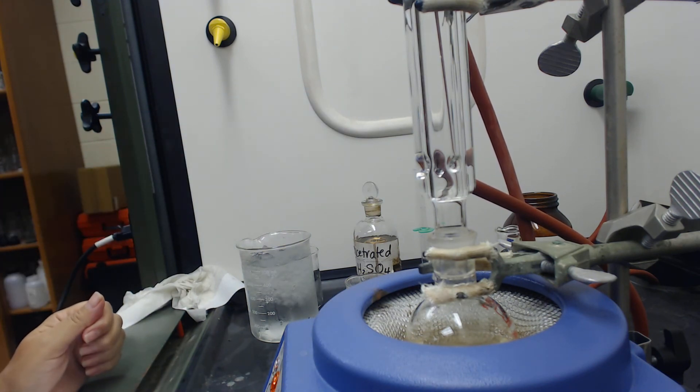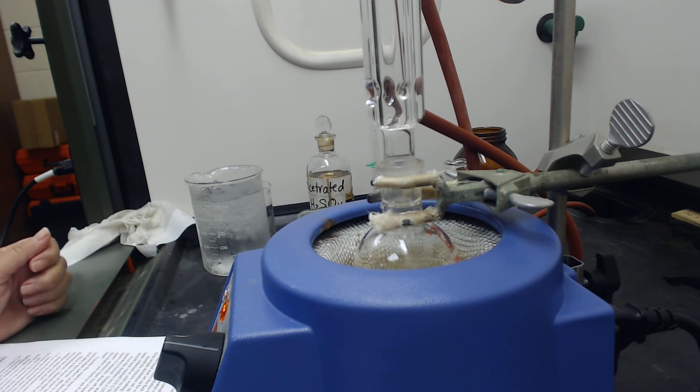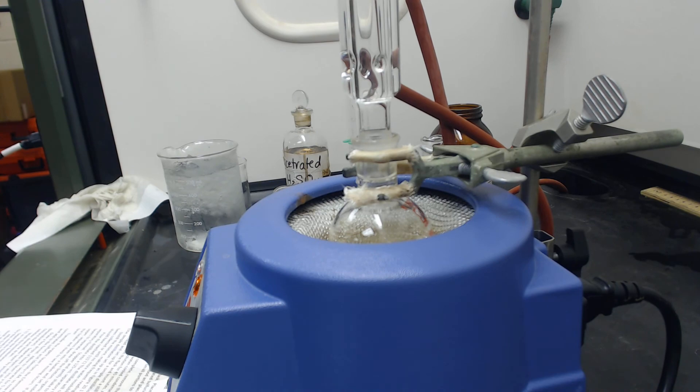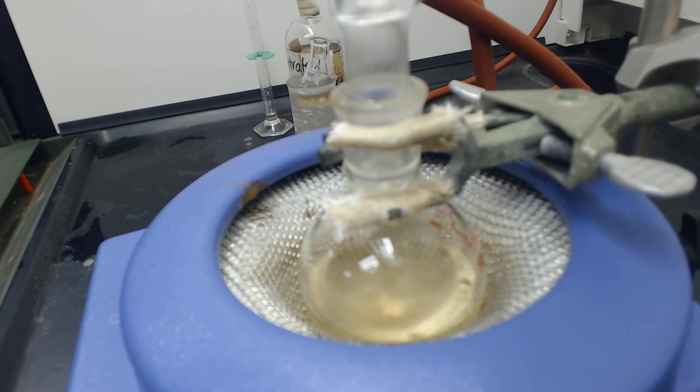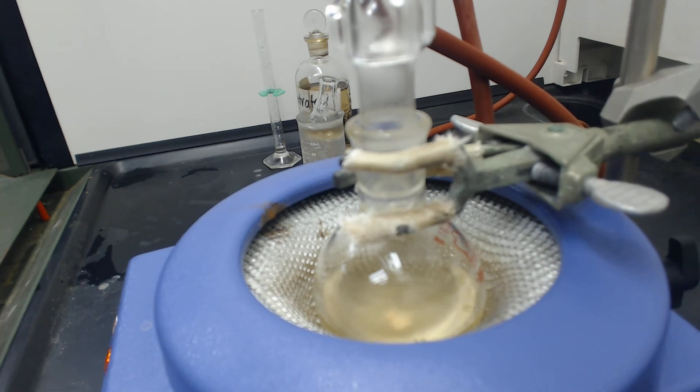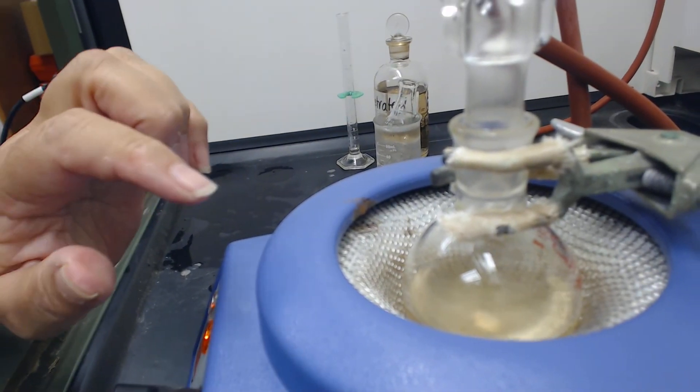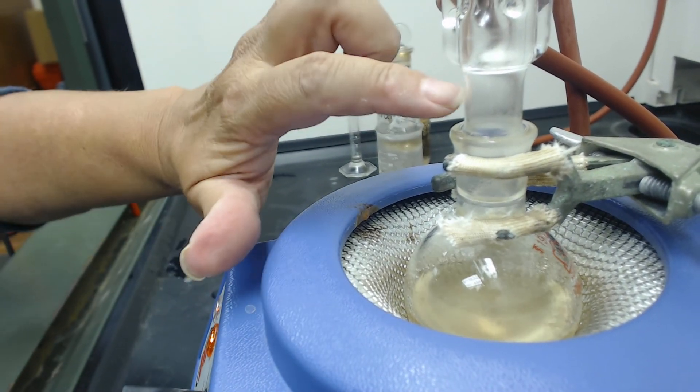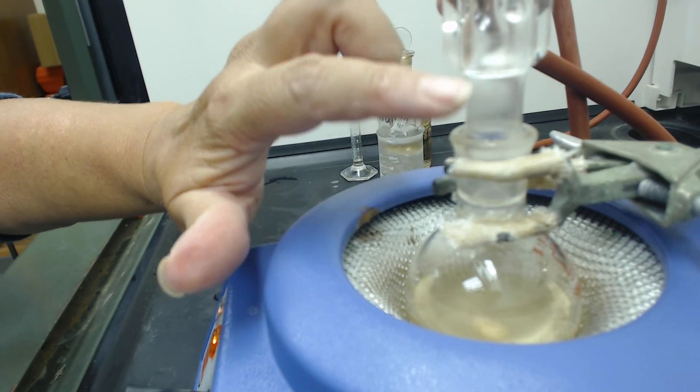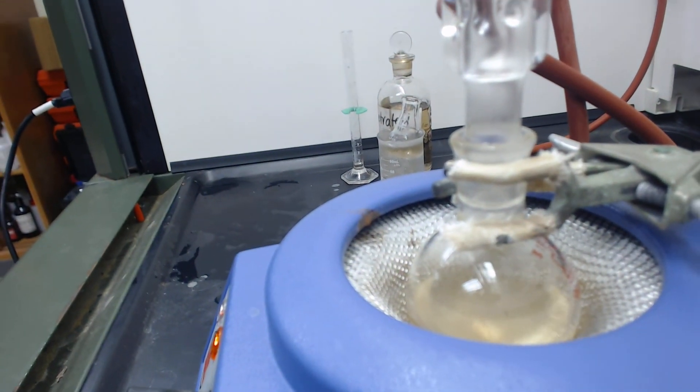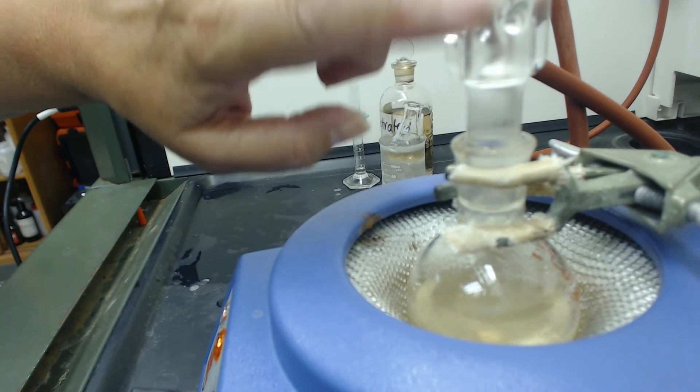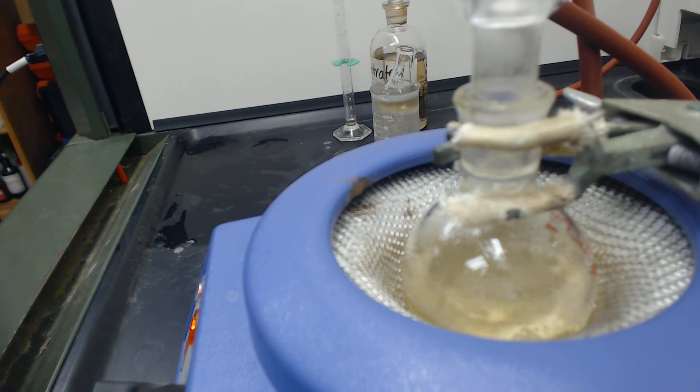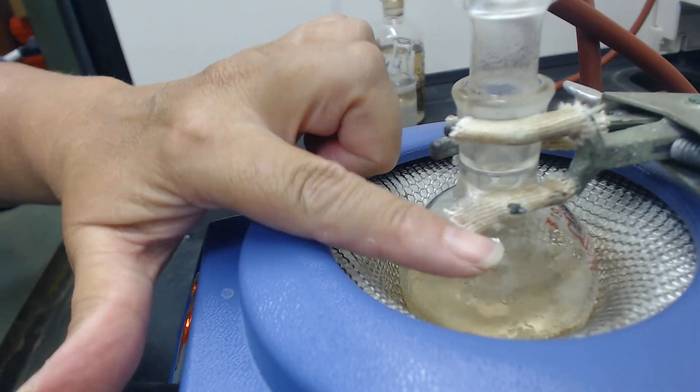All right, so it's starting to boil. You can start to see the vapors coming up here, but it's not escaping because it's condensing back down. I don't know if you can see it very well, but it's boiling and then it's dripping back into the flask right here.